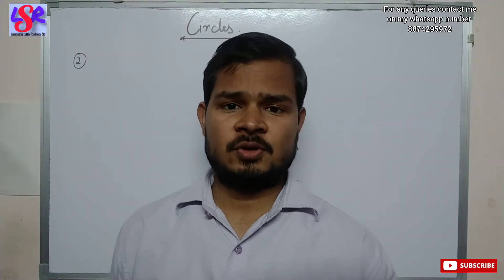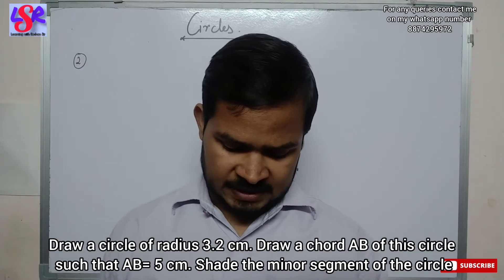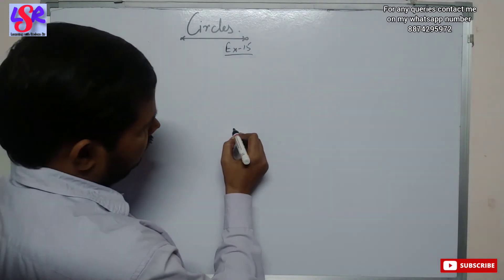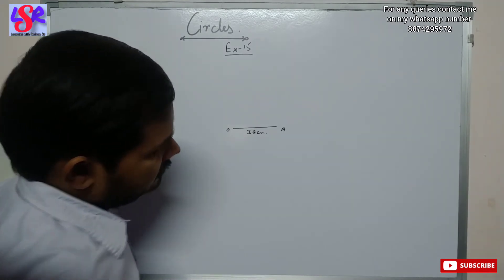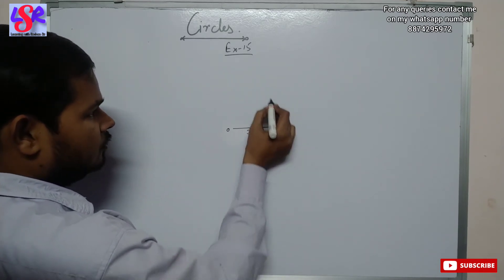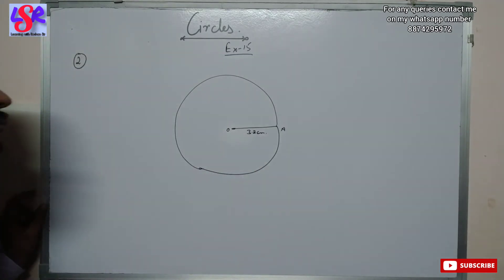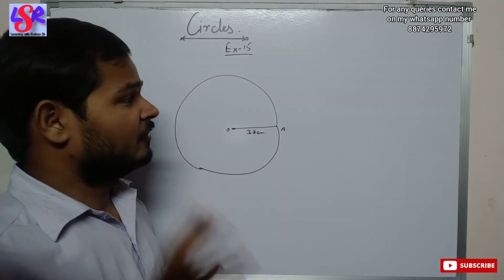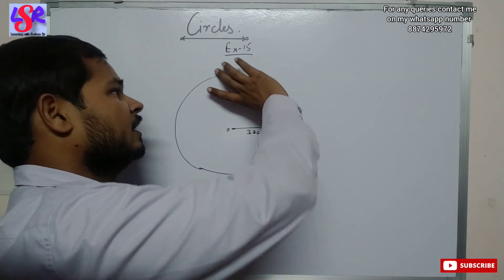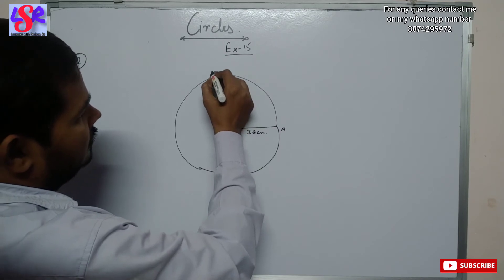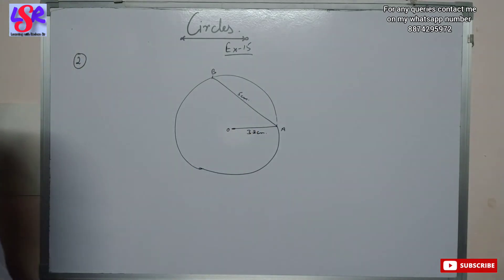Now let us do question number 2. Here we have to draw a circle of radius 3.2 cm, then draw a chord AB of the circle such that AB is 5 cm, and shade the minor segment. We draw a line of 3.2 cm as the radius, put the compass at the center and complete the circle. Then we set the compass to 5 cm, put it at point A, and make an arc — where it cuts the circle will be point B, giving the chord AB of 5 cm. This is the required figure for question number 2.